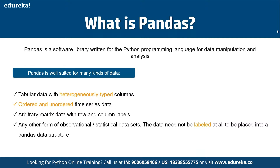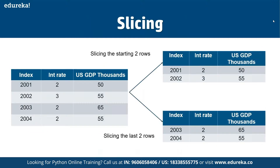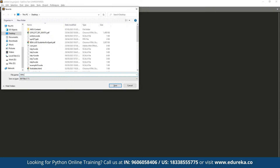With Pandas we can create multiple DataFrames to store data and perform calculations. We can slice DataFrames, change the index, convert data, perform join and merge operations, concatenate multiple smaller DataFrames into a single one, and change column headers. For a small use case, let's create a CSV file in Sublime Text — let's save it as data.csv.